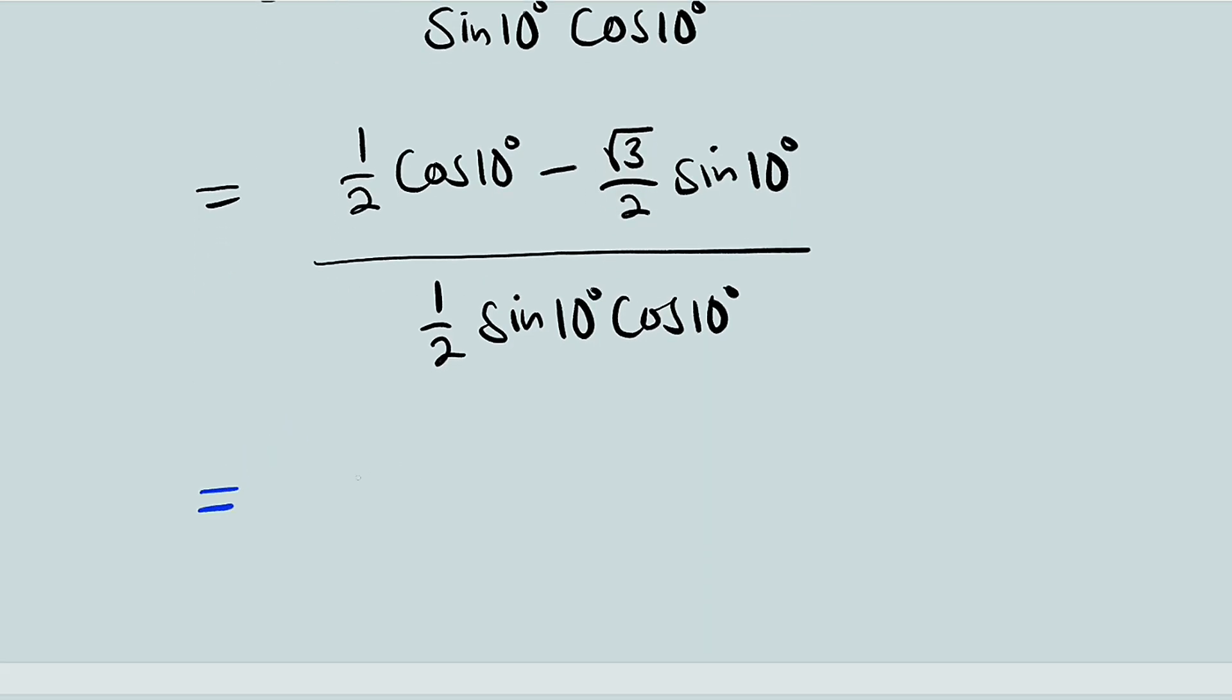So this becomes sine of 30 degrees multiplied by cosine of 10 degrees minus root 3 over 2, which is cosine of 30 degrees multiplied by sine of 10 degrees.